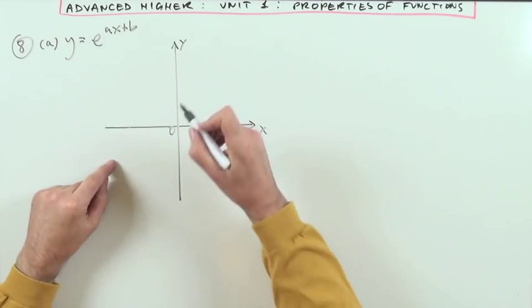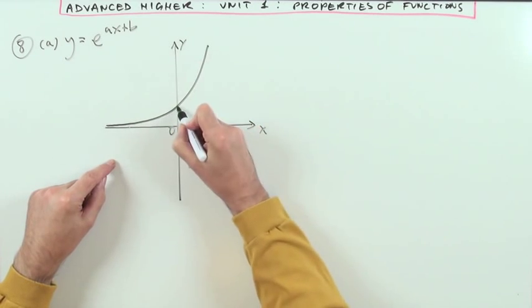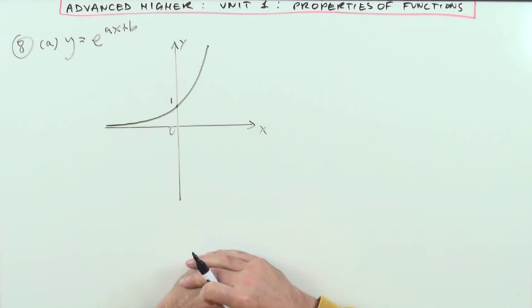The actual answers won't change. Now e to the x itself looks like this. It's an asymptote to the negative x axis and it crosses at one.